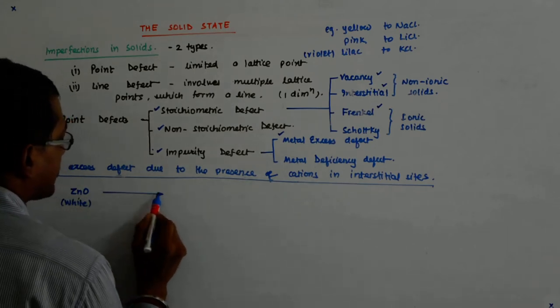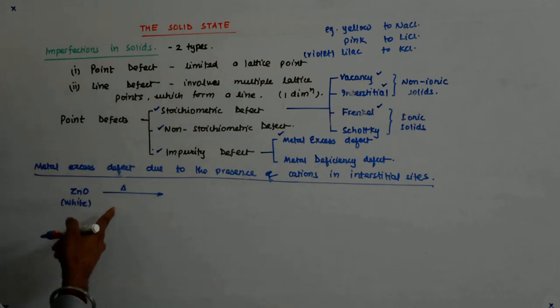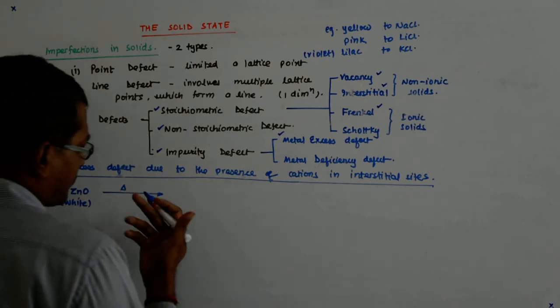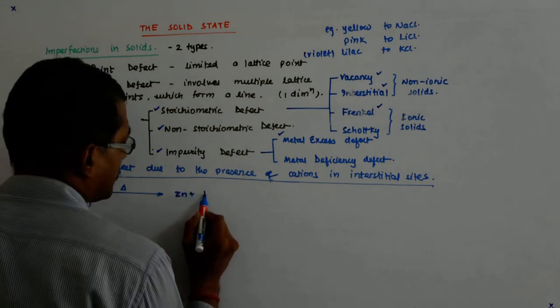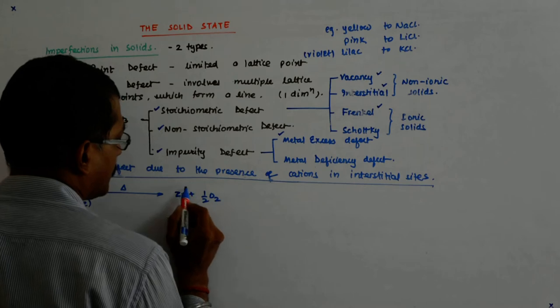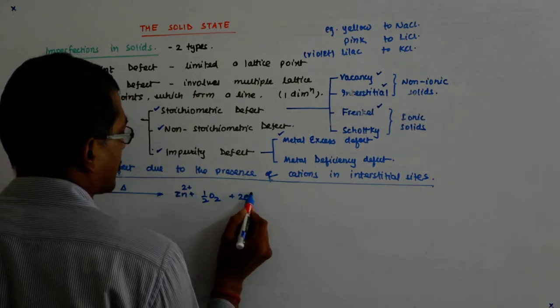if you heat it - this is the sign for energy being inputted, so it is considered as heating - that will give you ZnO plus heat becomes Zn2+ plus half O2 plus 2 electrons.